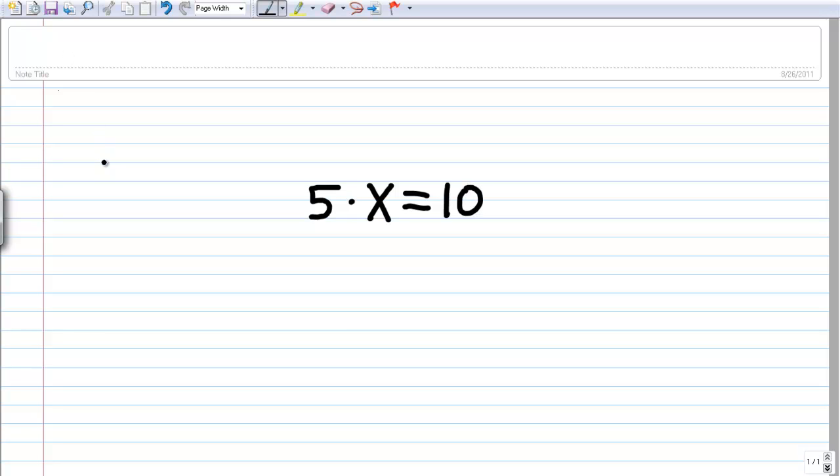What we want to do is try to find the value of x. One way we can do that is to try out some different values for x. We can do x is equal to 1, we can do 5 times 1, but that's equal to 5, which is not 10. So let's try a new value for x. We can do 5 times 2, and that equals 10. So we know that x is equal to 2.